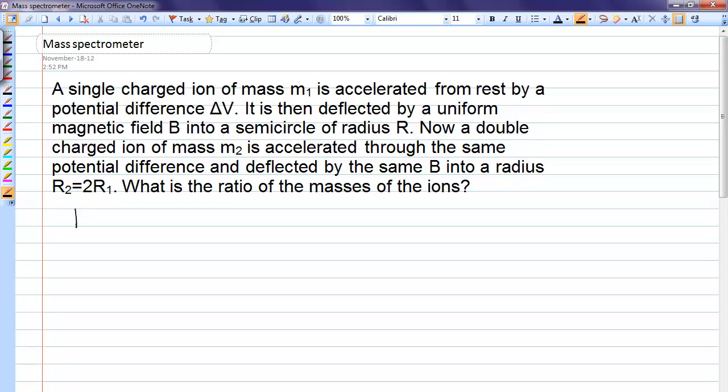So the first relationship that we need is that the electric potential energy of any charge being accelerated through a voltage delta V is Q delta V. We also know that kinetic energy is one-half mV squared. Equating these two things allows us to calculate the velocity as a function of voltage.